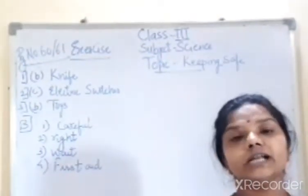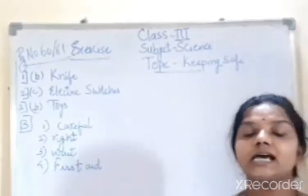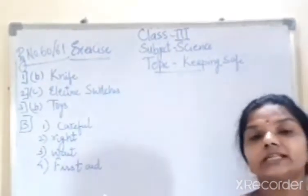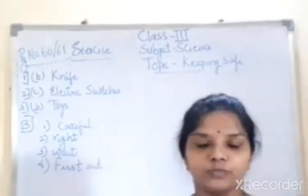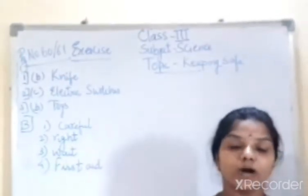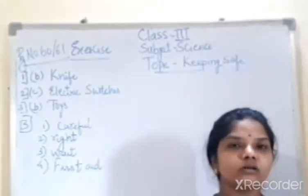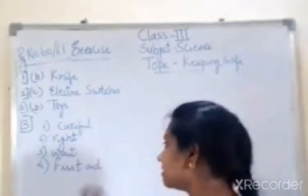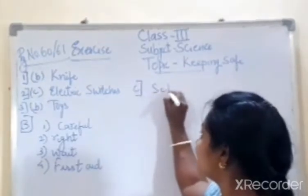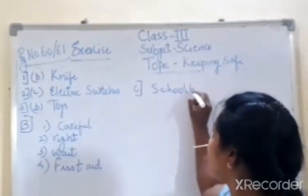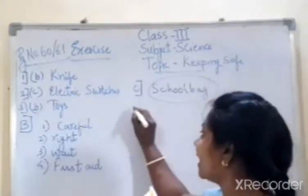Next, circle the odd one out. We have to circle the one which does not belong in the group. First group: switch, plug, wire, or school bag. School bag is the odd one out. So circle the school bag.